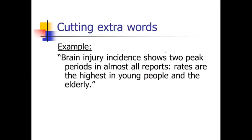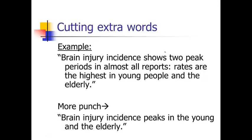Here's an example. Here's a perfectly good sentence. Brain injury incidence shows two peak periods in almost all reports. Rates are the highest in young people and the elderly. But compare that to the following, which has a lot more punch. Brain injury incidence peaks in the young and the elderly. See how much crisper, how much more power that second sentence has when we get rid of all the extra extraneous unnecessary words.